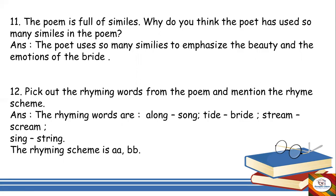Next: pick out the rhyming words from the poem and mention the rhyme scheme. The rhyming words are: along/song, tide/bright, stream/scream, and sing/string. The rhyme scheme of each stanza is AABB — the first two lines rhyme with each other and the third and fourth lines rhyme with each other. All three stanzas follow the same AABB rhyme scheme.